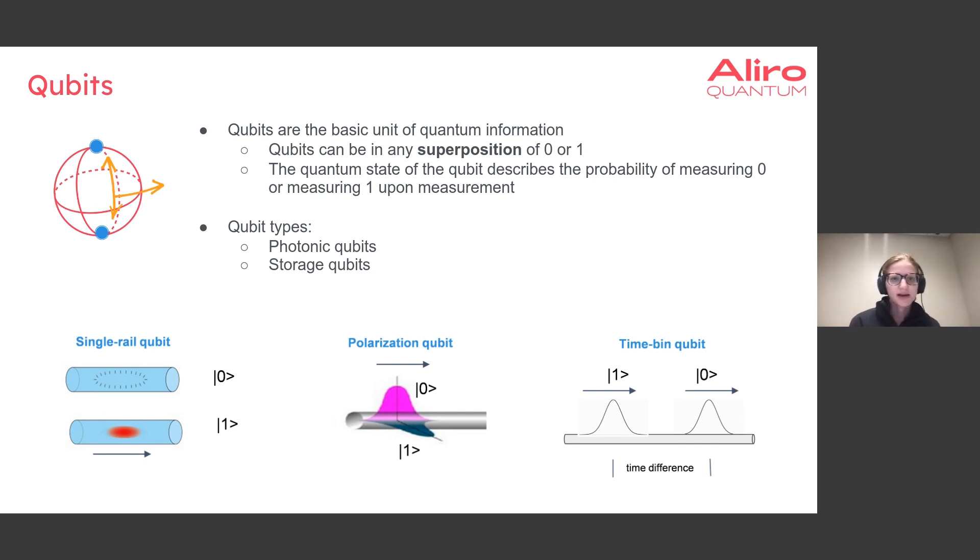There are photonic qubits and there are storage qubits. For instance, of the photonic qubits, there are further different types. There are single rail qubits which can describe the presence or absence of a photon.